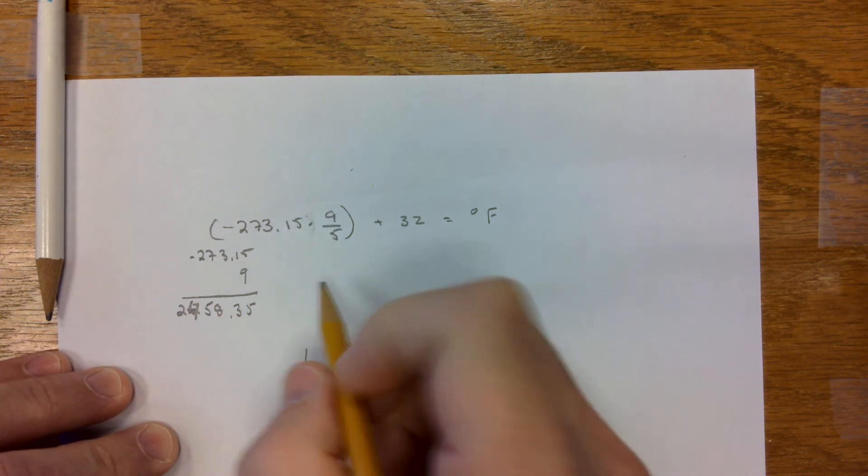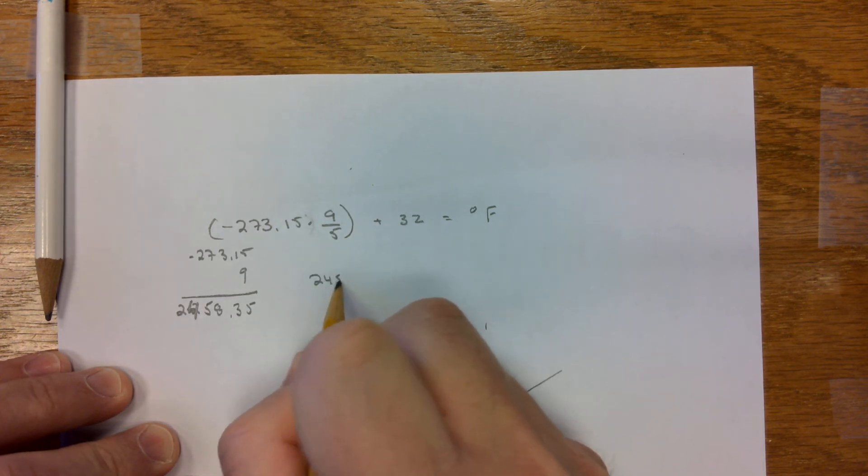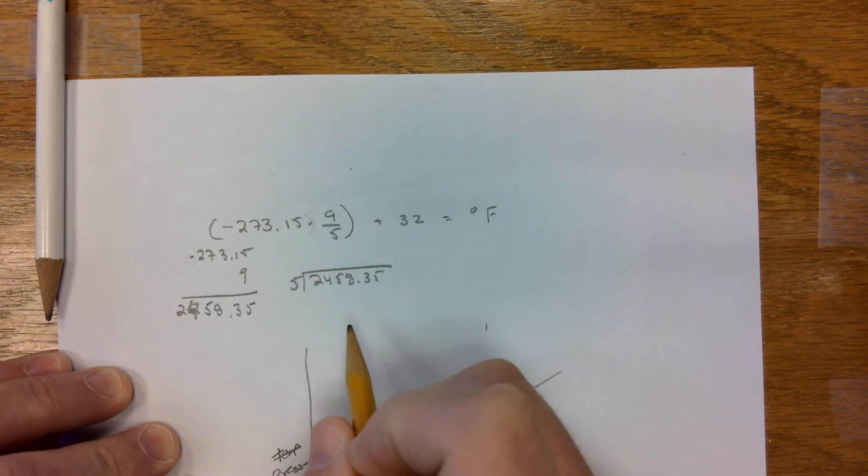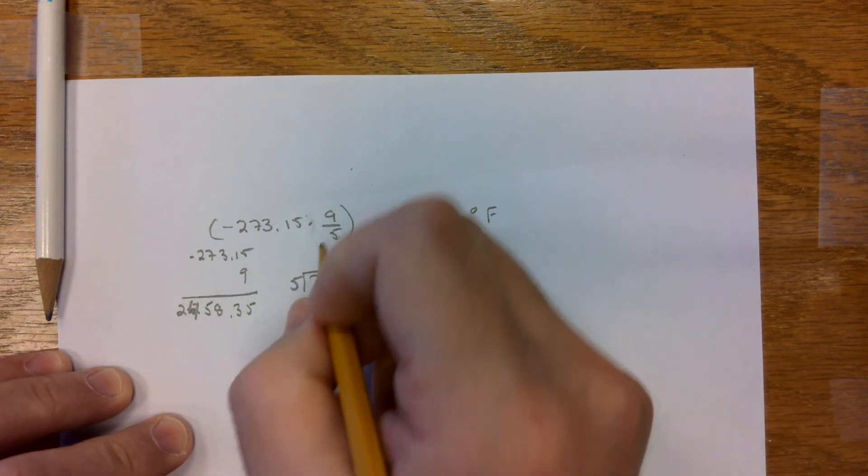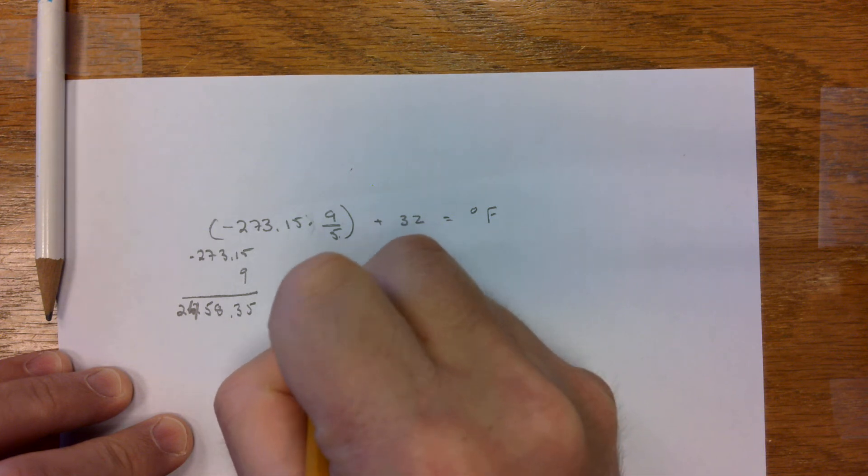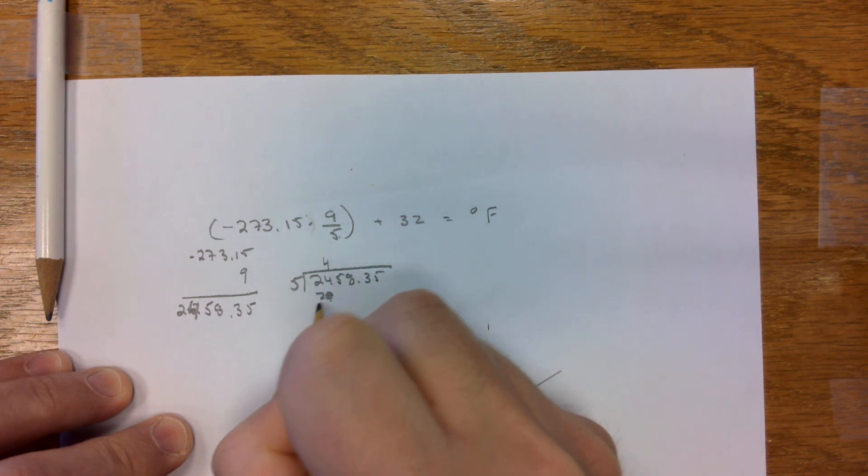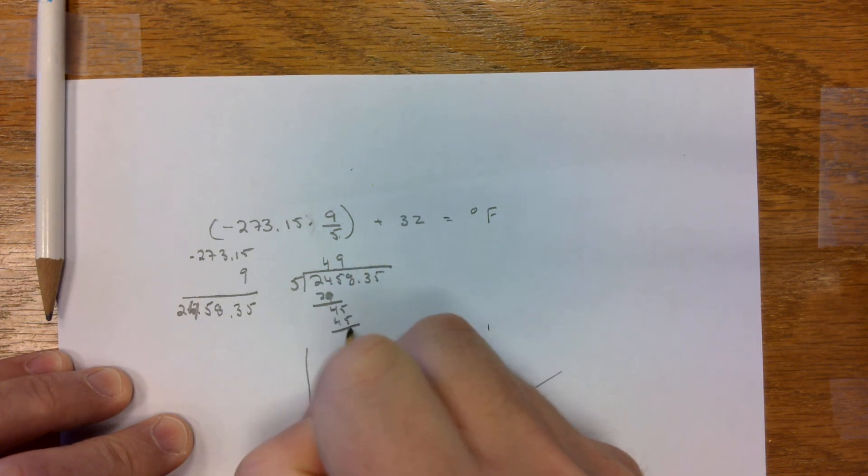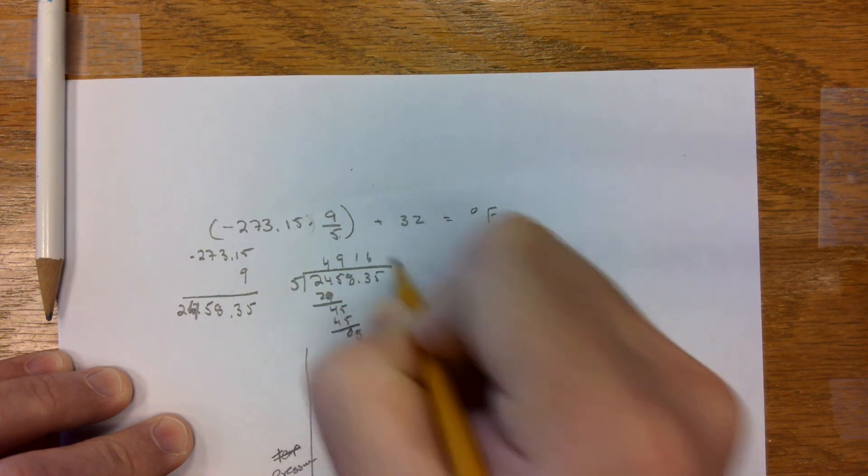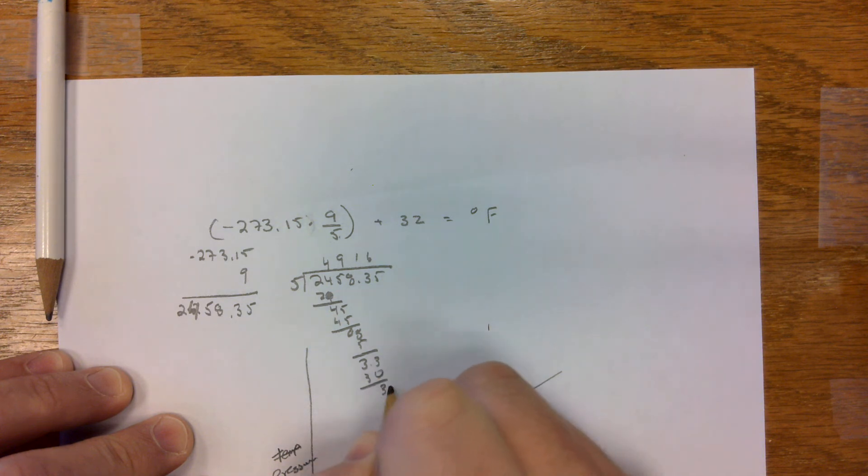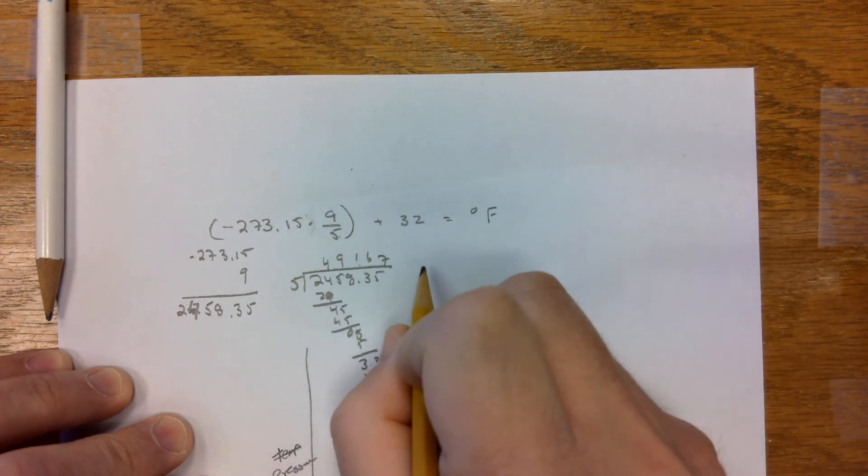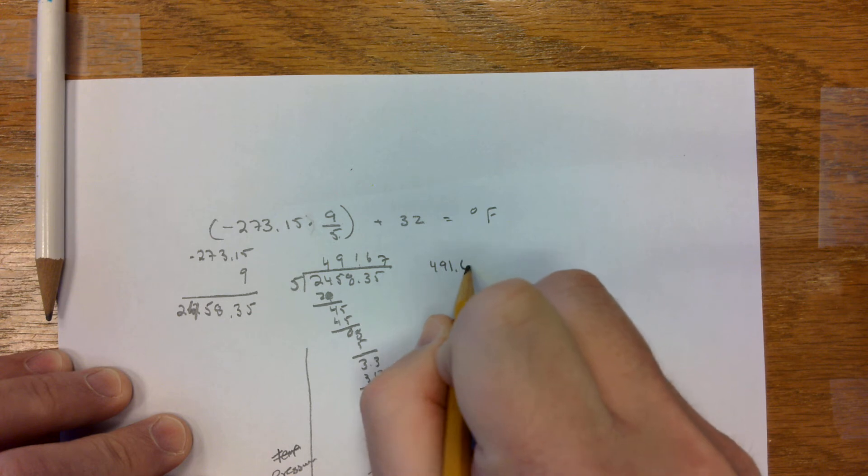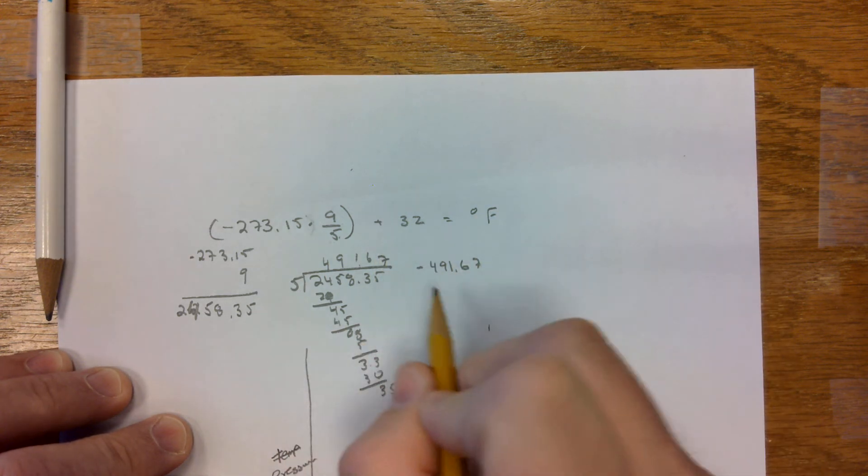The other half we need to divide. So, now we're going to divide 2458.35 by 5, because it's the same as dividing. And we're going to get 491.67. So, now we're at 491.67. We're not finished because this is a negative number. We still need to add 32 to that.